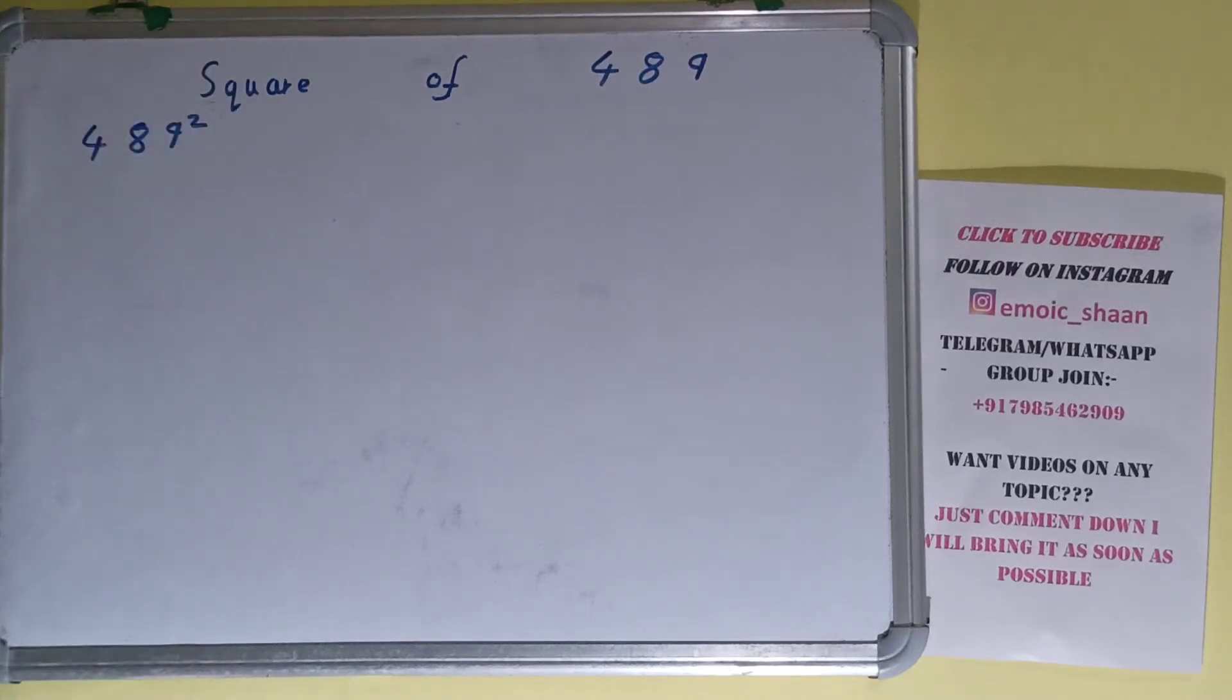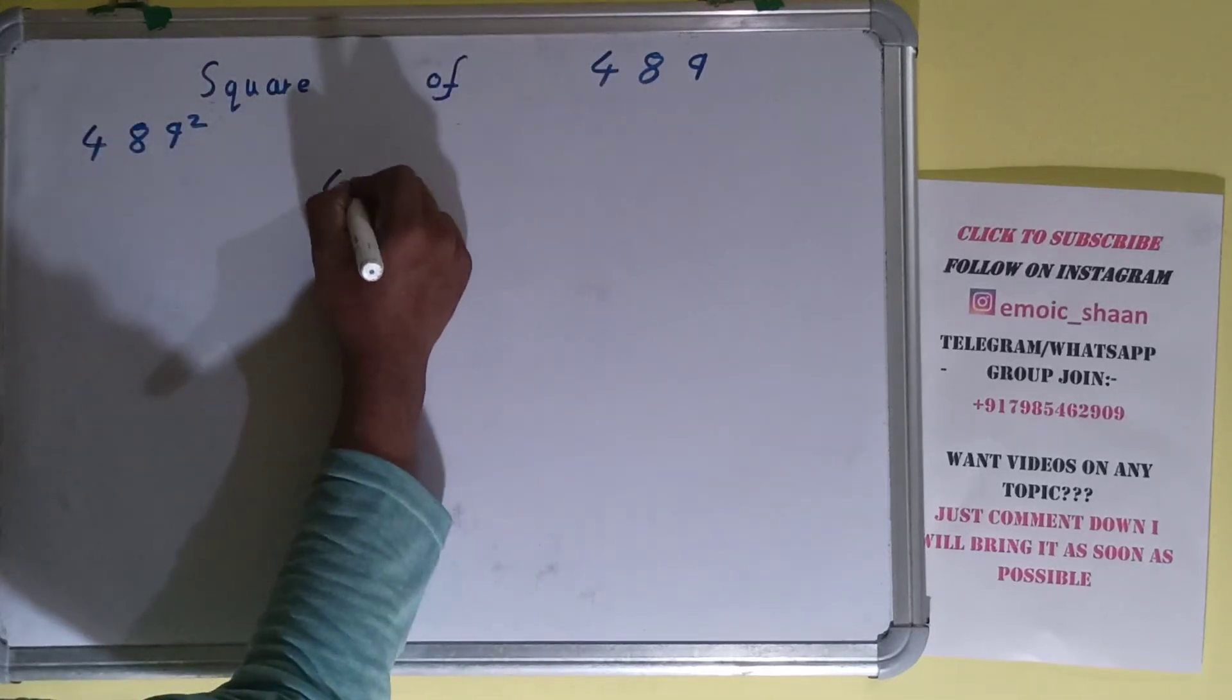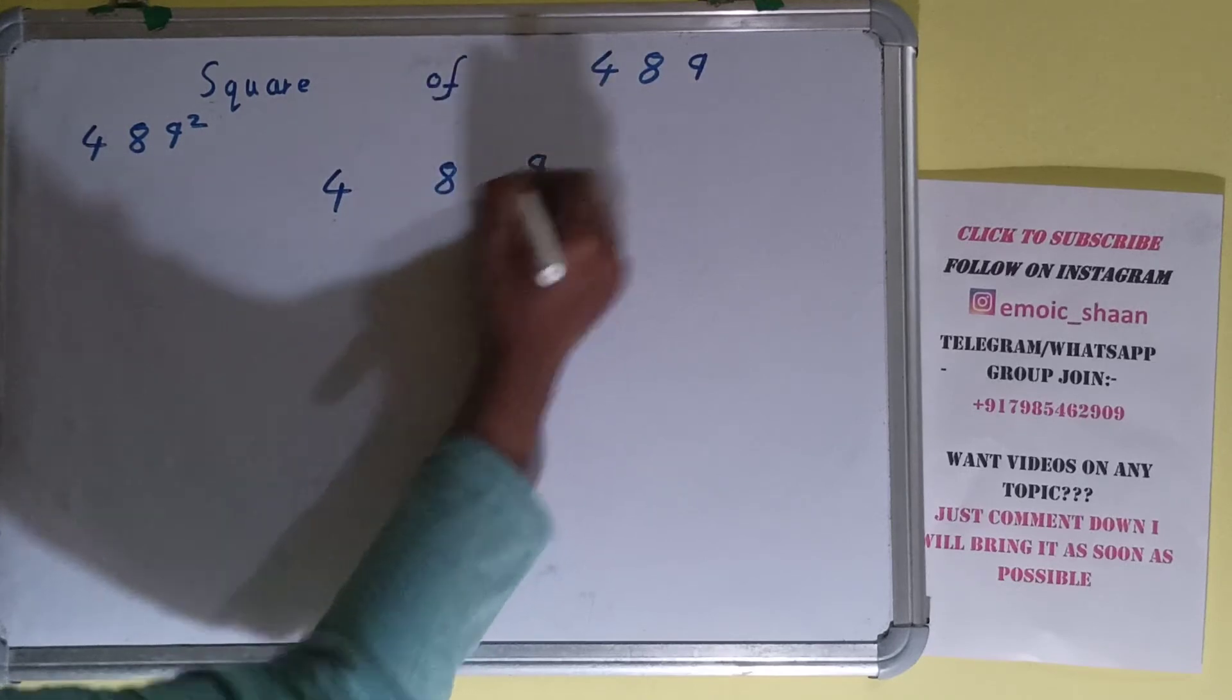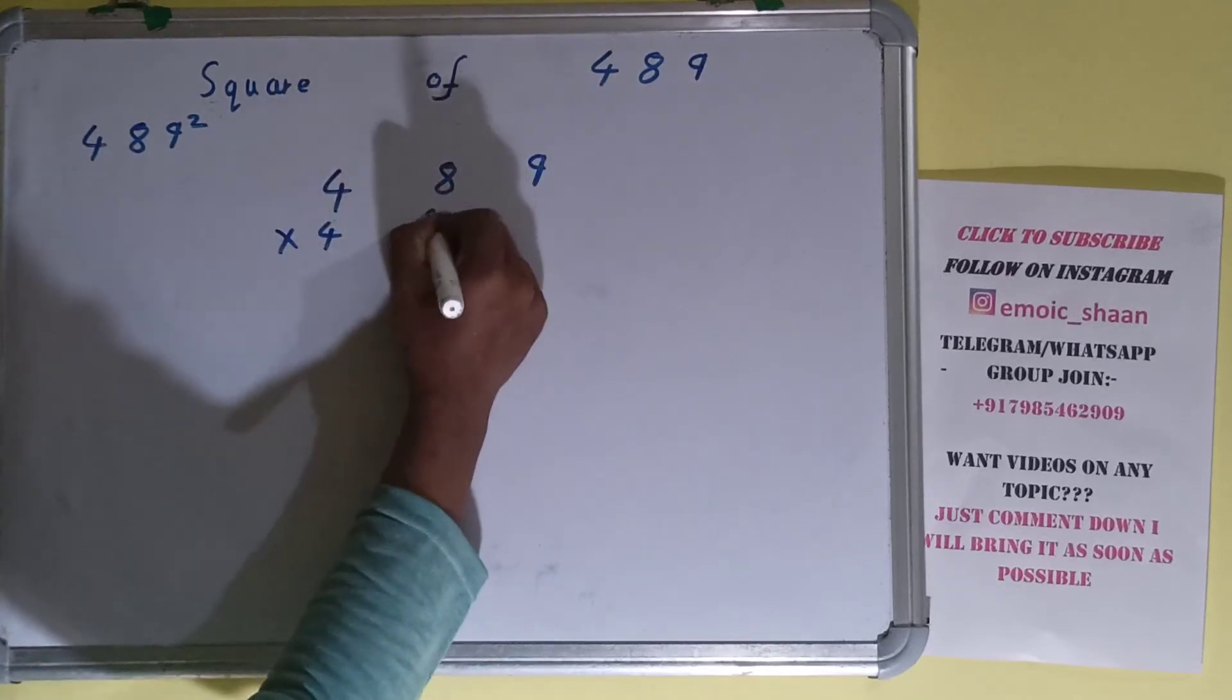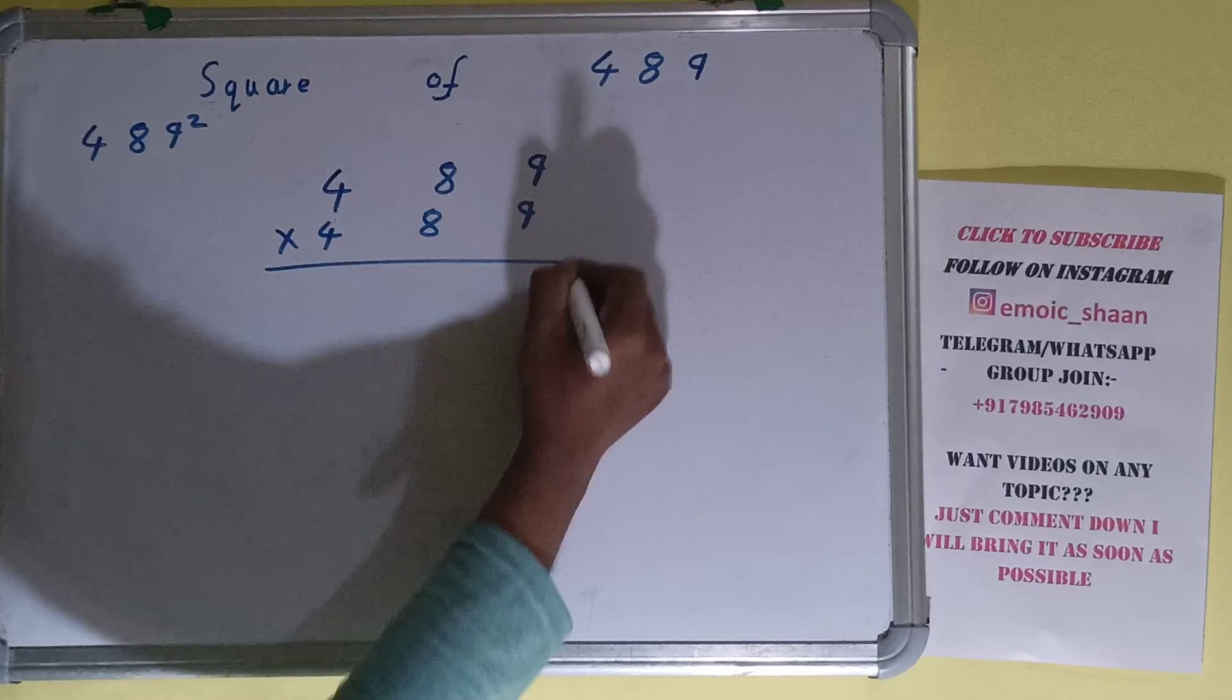Now moving on to the solution. Square basically means multiplying the number by itself, and the number here is 489. To find square of it we need to multiply by itself, that is 489, and do the multiplication.